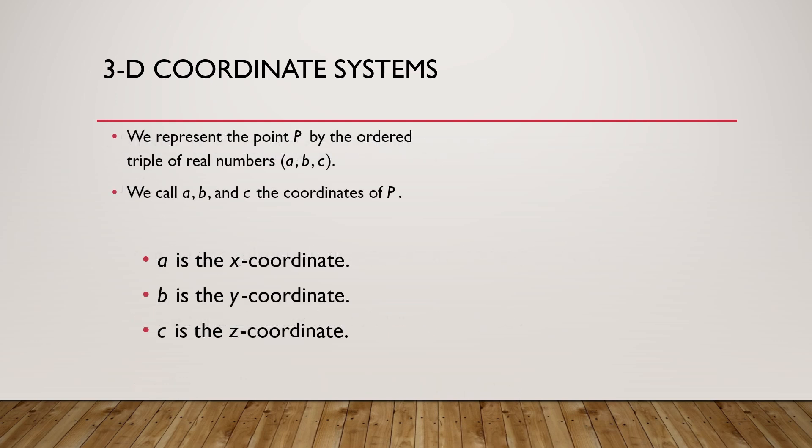The point P may be represented by an ordered triple pair of a real number, that is ABC. We can call ABC as the coordinates of P, where a is the x-axis coordinate, b is the y-axis coordinate and c is the z-axis coordinate.